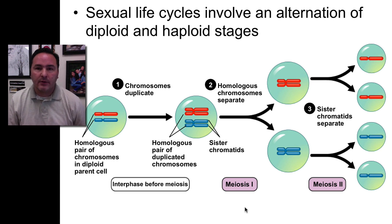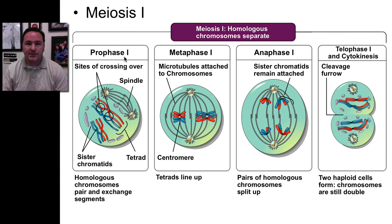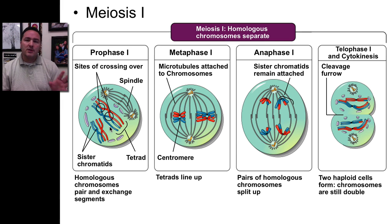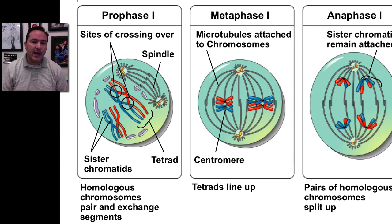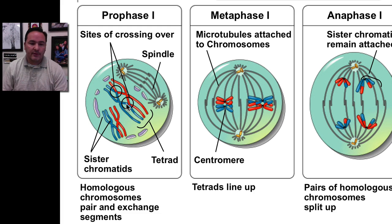Looking in detail at meiosis I: it has the same stages as mitosis — prophase, metaphase, anaphase, and telophase with cytokinesis. In meiosis I, homologous chromosomes separate. During prophase, the homologous chromosomes come into close proximity and actually exchange tips — you get blue chromosomes with red tips and red chromosomes with blue tips. This is called crossing over or recombination. The sites of crossing over are where chromosomes cross and swap tips. That whole formation is called a tetrad.